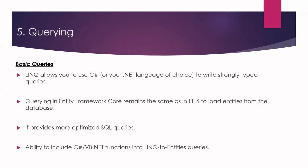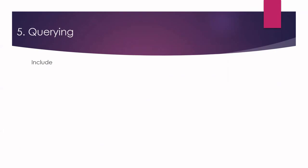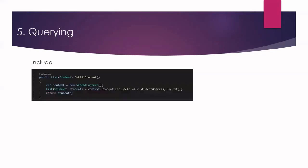The Include method specifies related objects to include in a particular query result set. It can be used to retrieve data from the database and also include related or relational entities. For example, when retrieving all student records, if you also need the student address detail, you use the Include method to load the student address along with the student data.